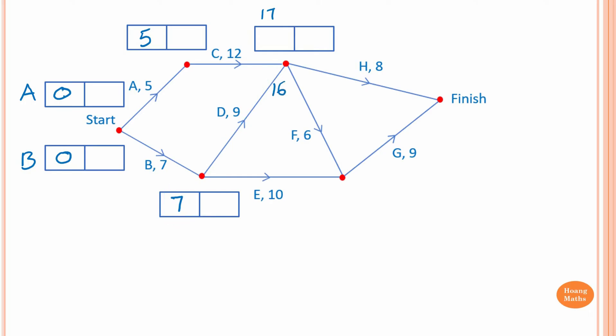The earliest time that you can start on H or F is 17. If you write 16, you have completed activity D but not activity C. So the earliest time is 17, ensuring you complete both activity D and C. In other words, for forward scanning you take the largest value.